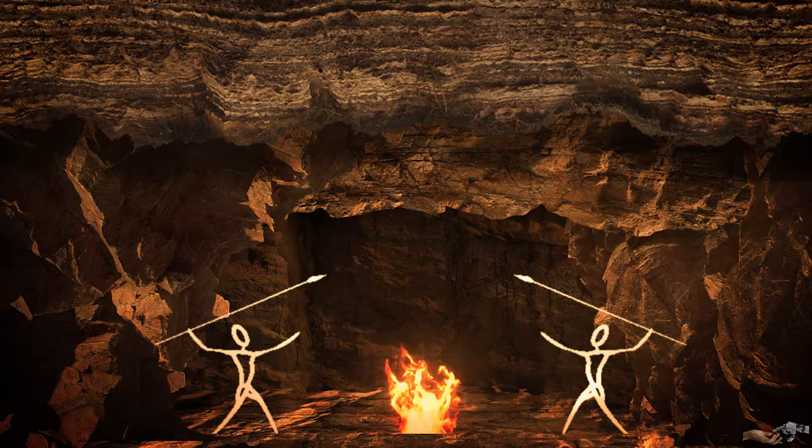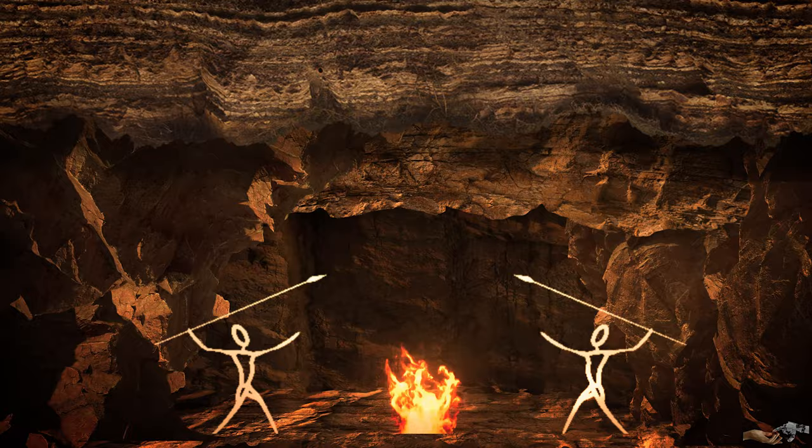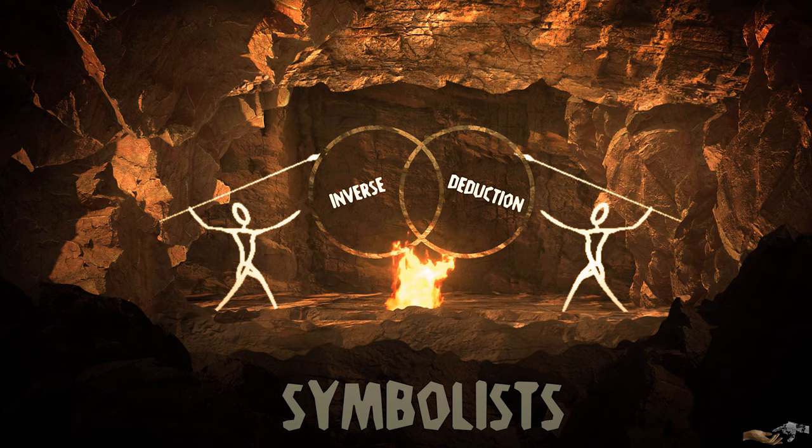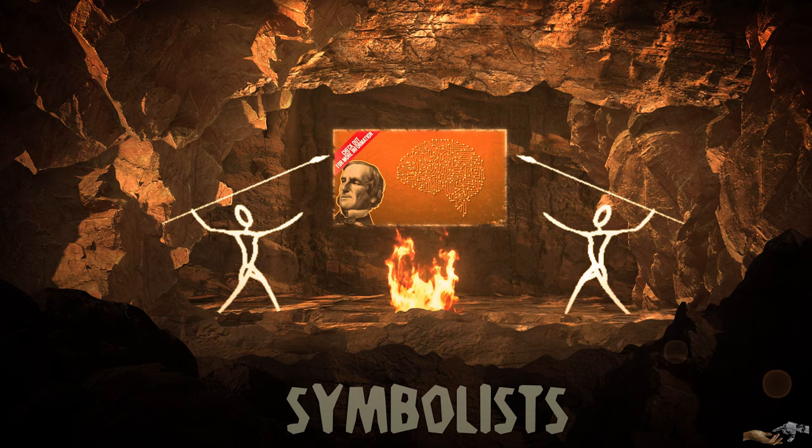The first tribe is the symbolists. They focus on the premise of inverse deduction. They don't start with a premise to work towards conclusions, but rather use a set of premises and conclusions and work backwards to fill in the gaps. We discuss this in the history of AI video and will focus on it more heavily in a future video on artificial human intelligence.